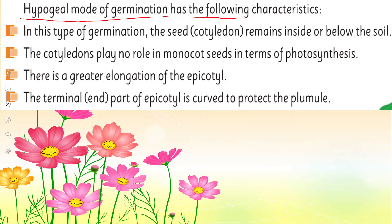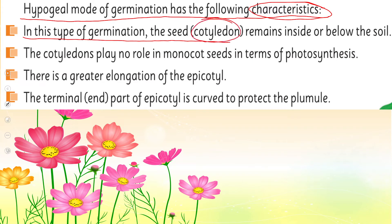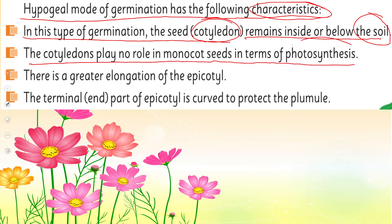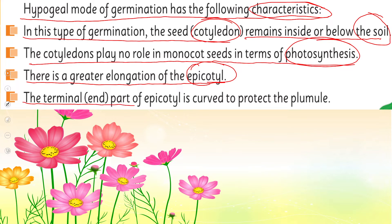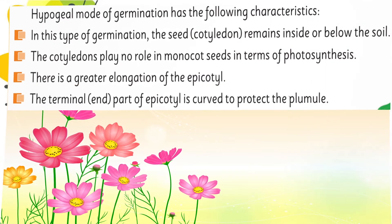The hypogeal mode of germination has the following characteristics: the cotyledon remains inside or below the soil; the cotyledons play no role in photosynthesis in monocot seeds since they stay underground; there is greater elongation of the epicotyle; and the terminal end of the epicotyle is curved to protect the plumule.